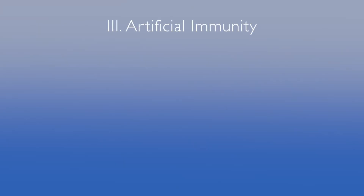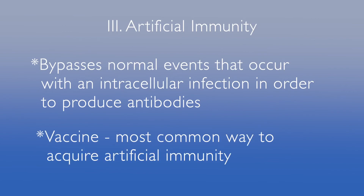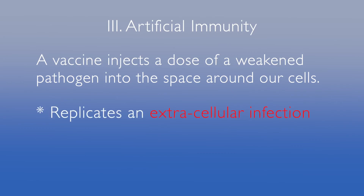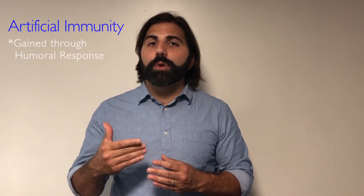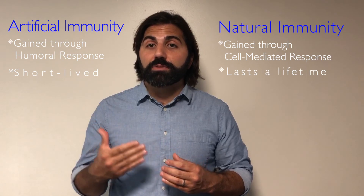Now, let's talk about artificial immunity. Artificial immunity attempts to bypass the normal cascade of events that occur with an intracellular infection in order to produce antibodies. A vaccine is the most common way to acquire artificial immunity. Generally speaking, a vaccine injects a dose of a weakened pathogen into the space around our cells. This replicates an extracellular infection and creates a humoral response. And like all humoral responses, the effects are not long-lasting — antibody production is short-lived. This is the main difference between artificial immunity and natural immunity. Artificial immunity is gained through a humoral response and is short-lived. Natural immunity is gained through a cell-mediated response and has the potential to last a lifetime.